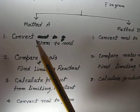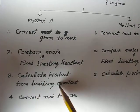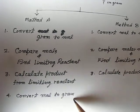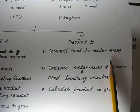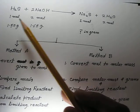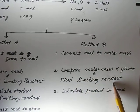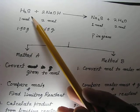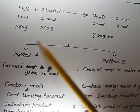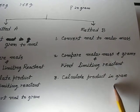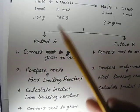Method A: convert all gram quantities into moles, compare the moles, find out the limiting reactant, use that limiting reactant to calculate the product, then convert moles to grams for the final answer. Method B: find the molecular mass of each reactant, compare in gram quantities, and calculate the product in gram quantities using the limiting reactant. Here I will show you how to solve this using Method A, which is easier.